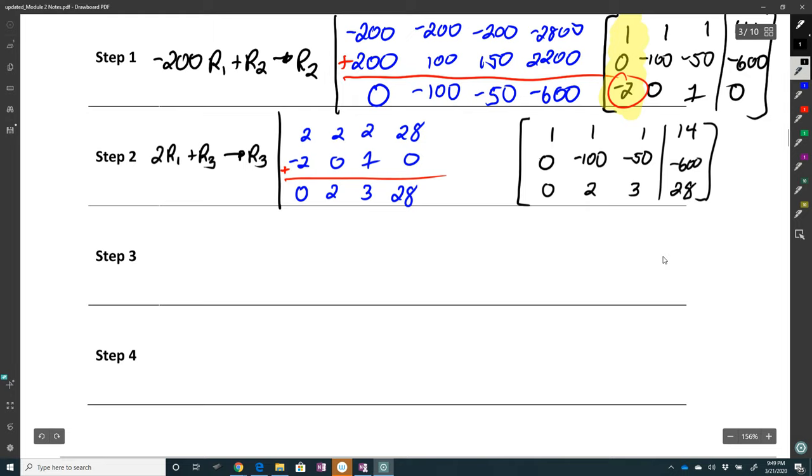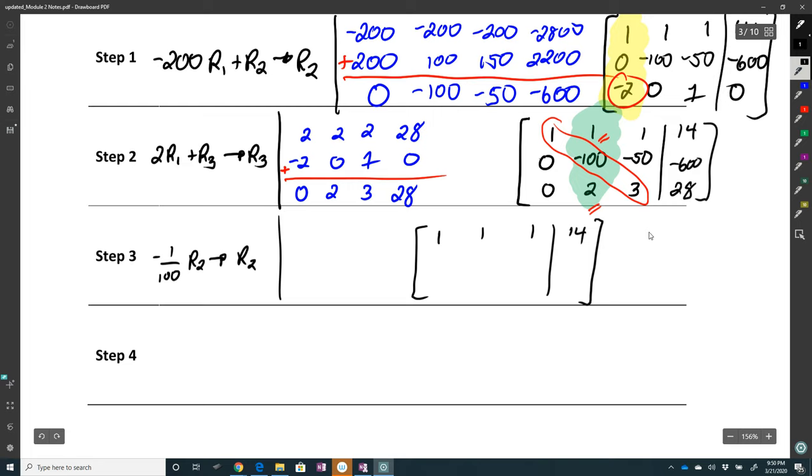All right, so now we're going to go through and we're going to look at column 2. Always start with the diagonal element first. So always take care of the diagonal element first. And then from there, you can take care of the other two, whether it be this one or this one. So the diagonal element, I want to make a 1. And so you just multiply by the reciprocal. Negative 1 over 100, row 2, becomes my new row 2. And I can just do that mentally. I have 1, 1, 1, 14. So if I divide by negative 100, I have 0, 1, and then negative 50 over 100 is 1 half. And then 600 over 100 is 6. And then 0, 2, 3, 28.